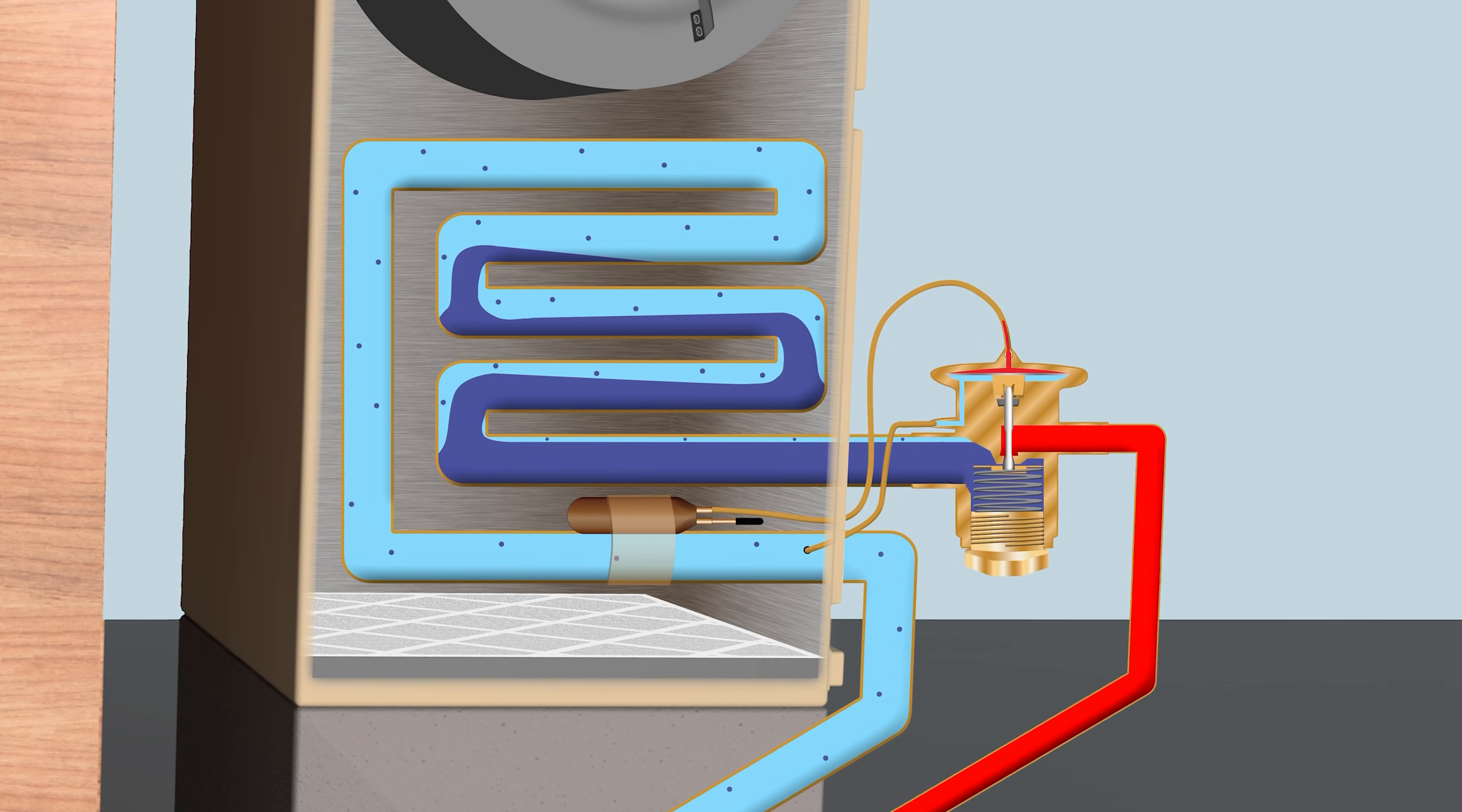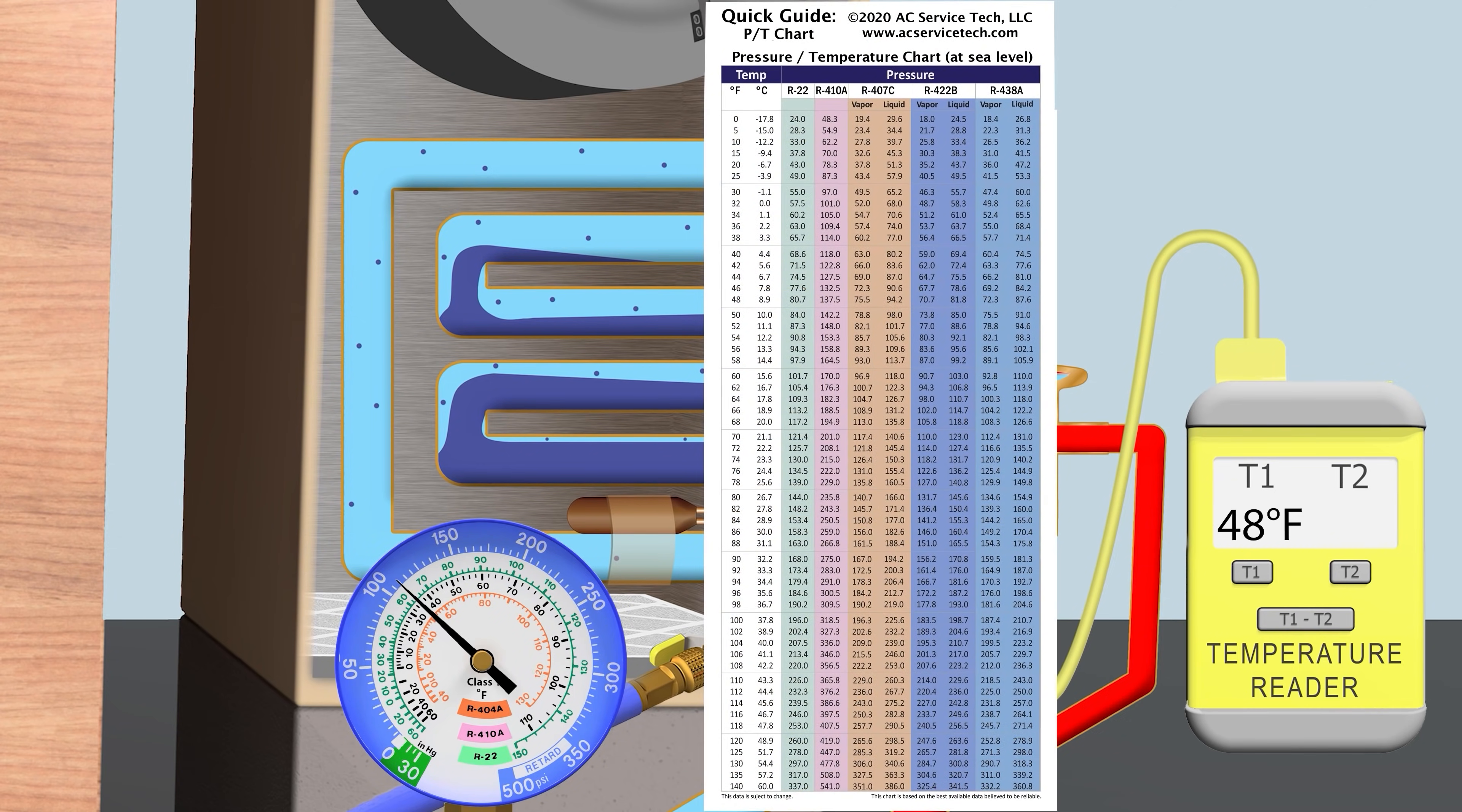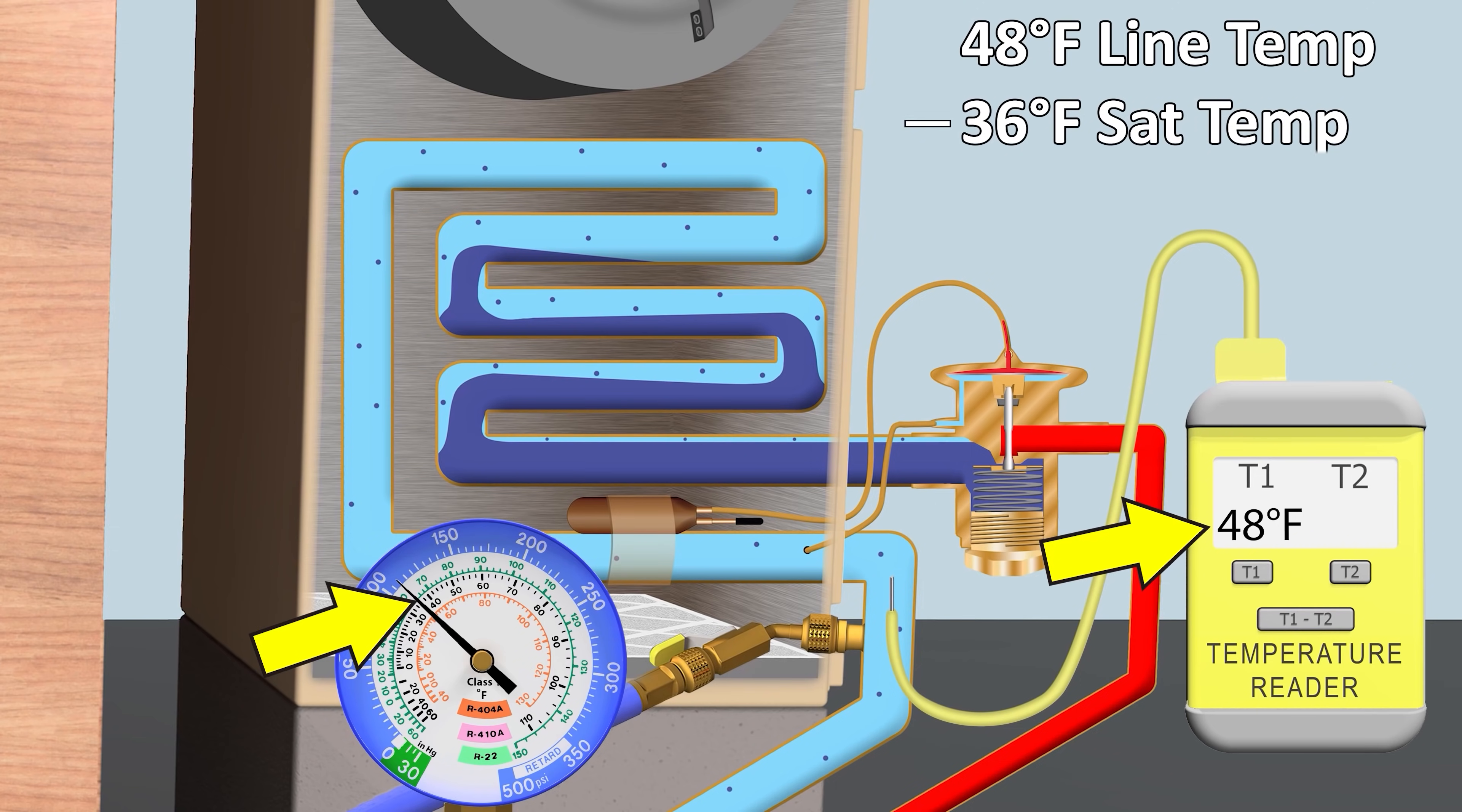When you're measuring superheat, you need a pressure tap on the vapor line and a temperature on the vapor line. You take that temperature, which in this case is 48 degrees on this line, and you take a pressure reading on the vapor line. In this case it's 109.4 psi, and that converts to an R410A saturated temperature of 36 degrees. So you take a vapor line temp of 48 minus a saturated temperature of 36, and you're left with 12 degrees of superheat.